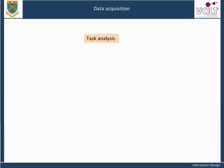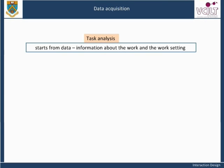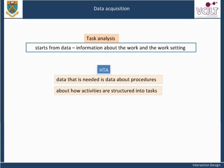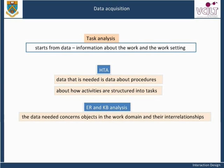Task analysis of any kind starts from data — information about the work and the work setting. For HTA, the data that is needed is data about procedures, about how activities are structured into tasks. For ER and KB analysis, the data that is needed concerns objects in the work domain and their interrelationships, and maybe also the actors — people — that are essential to getting the work done.